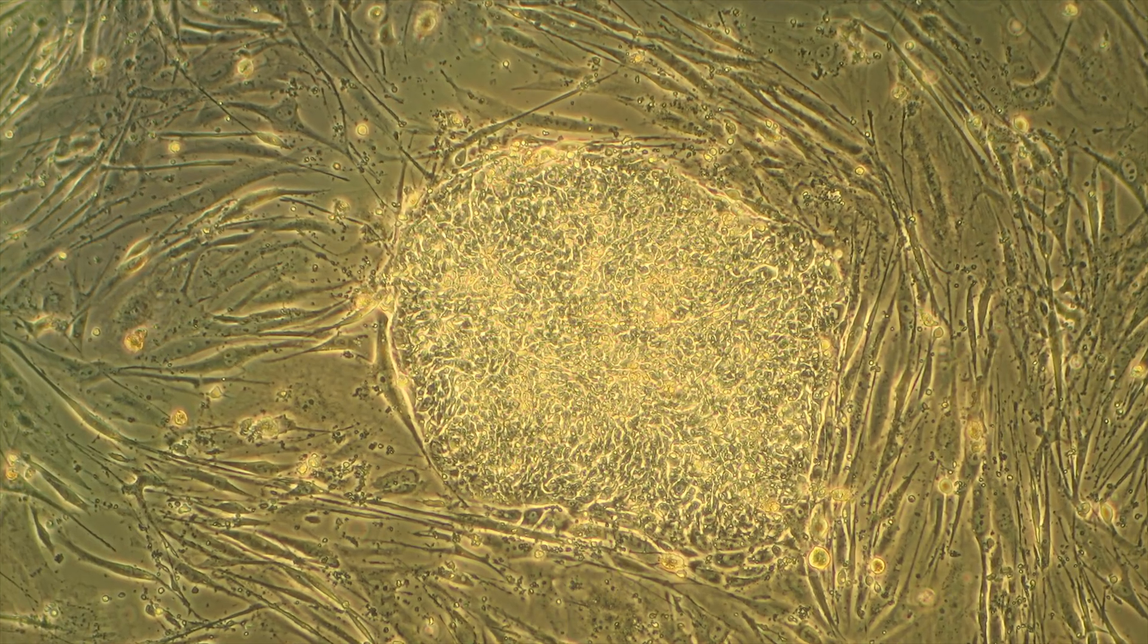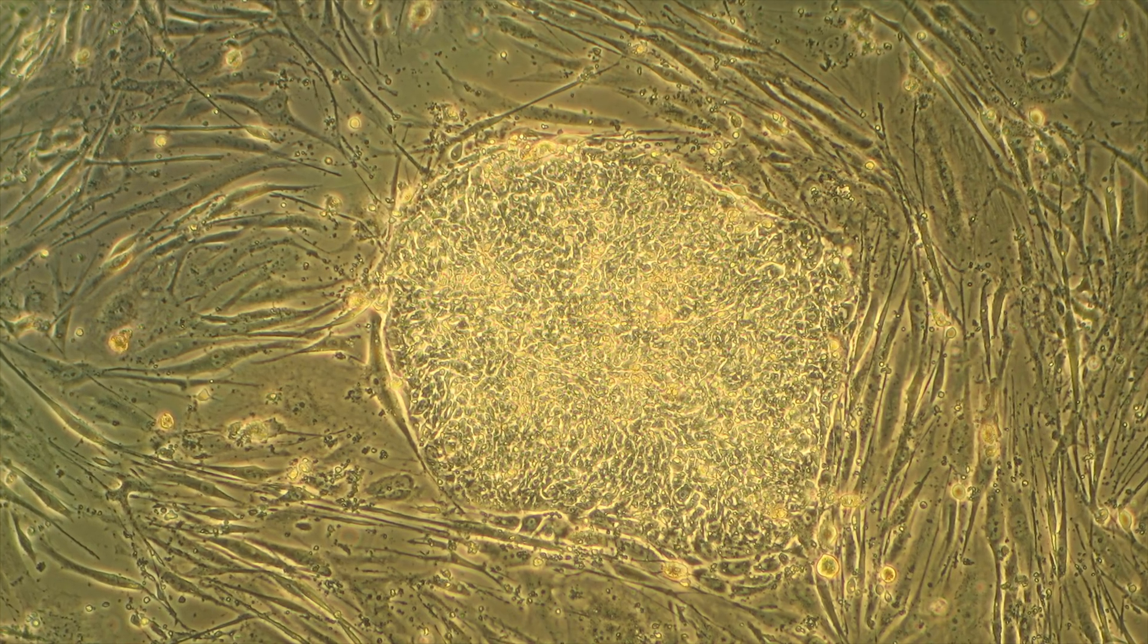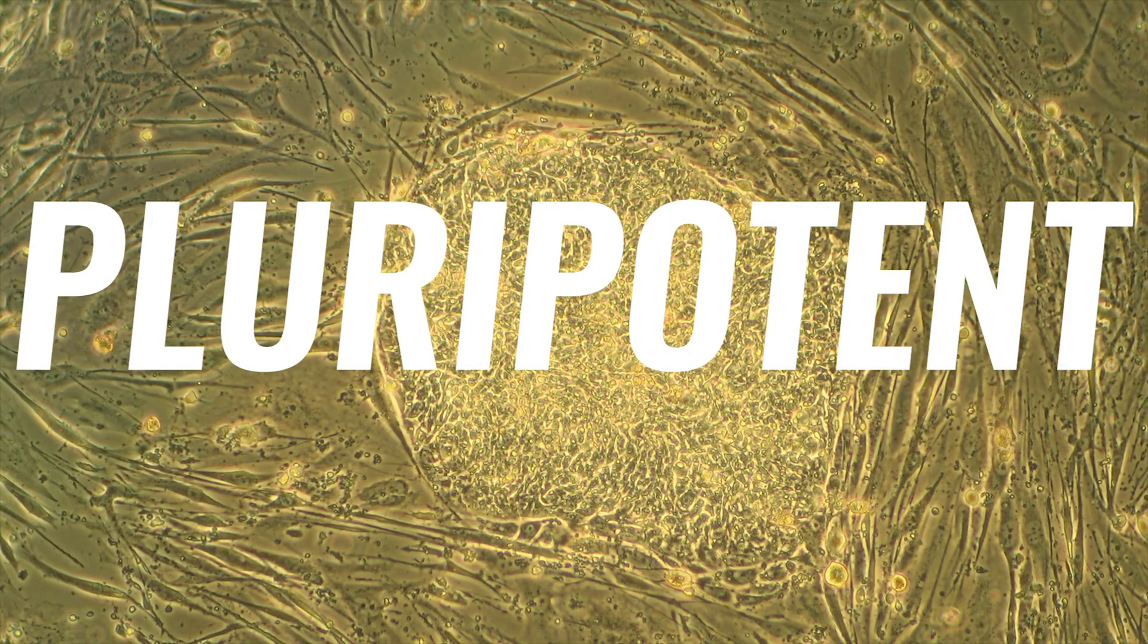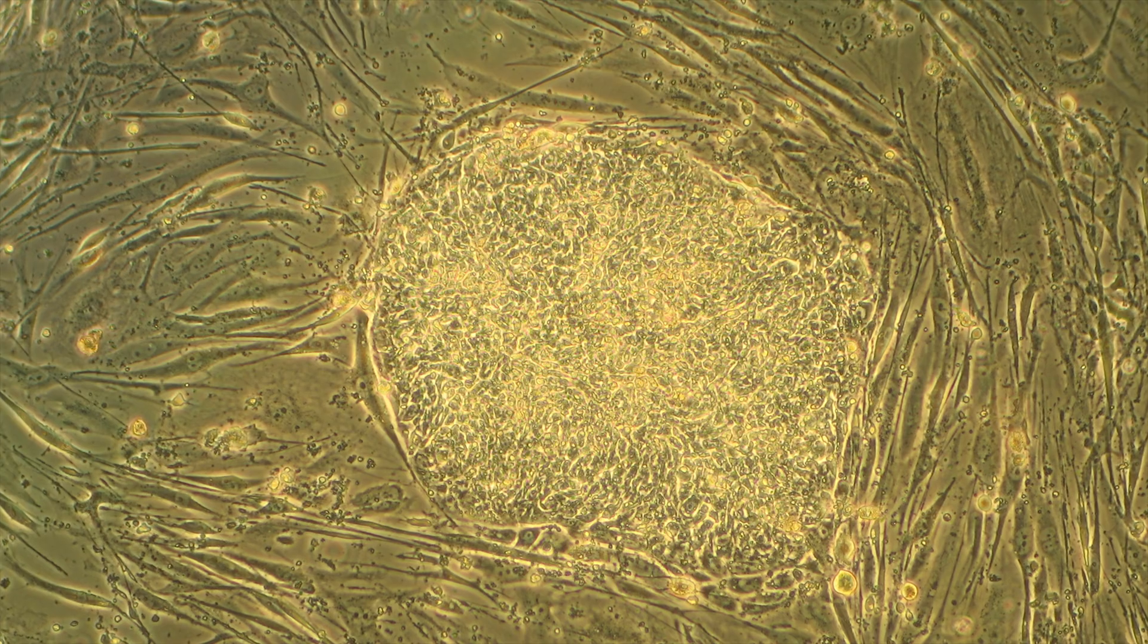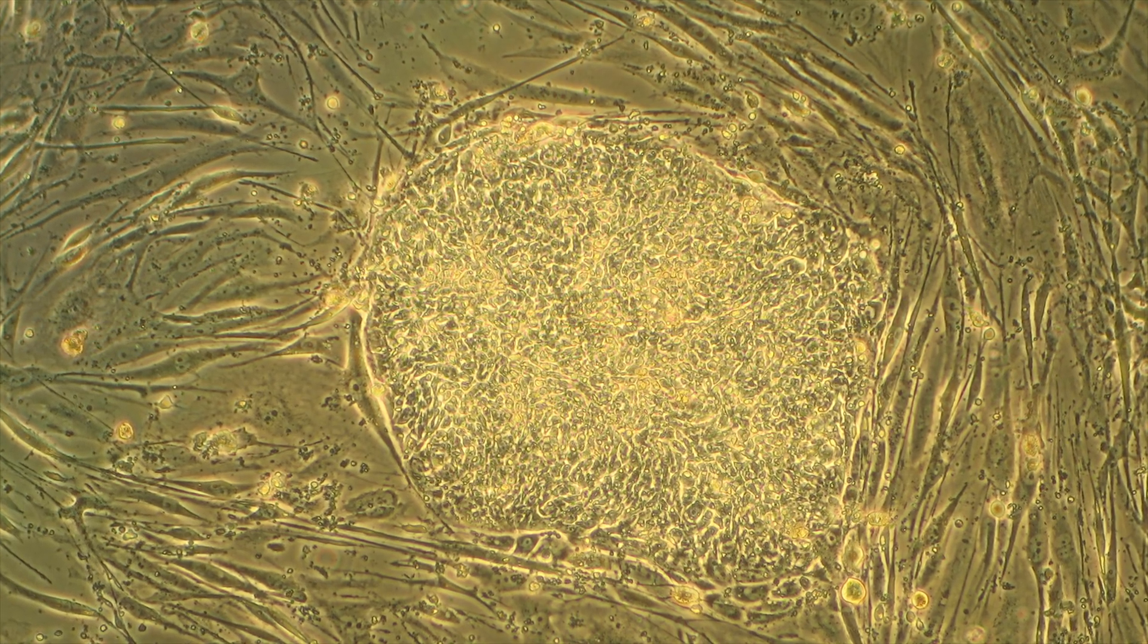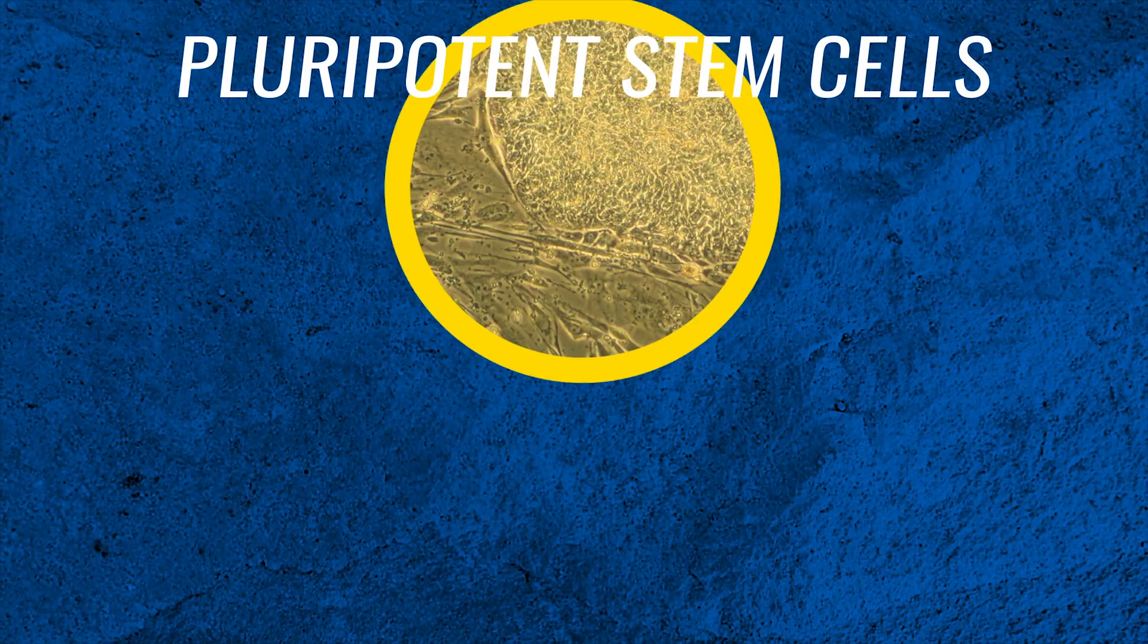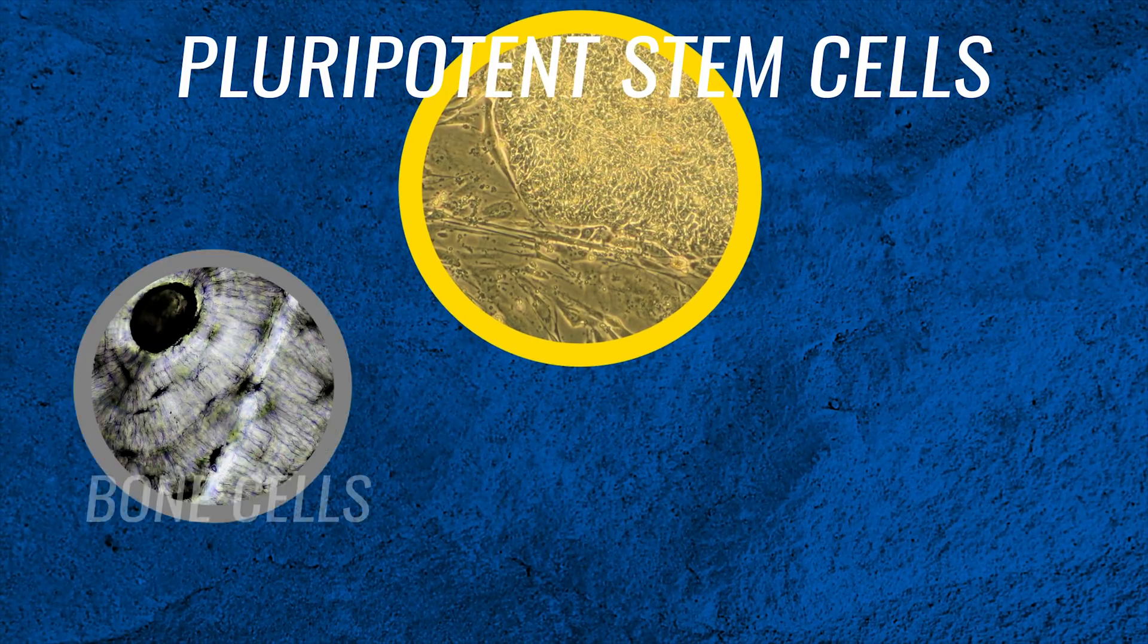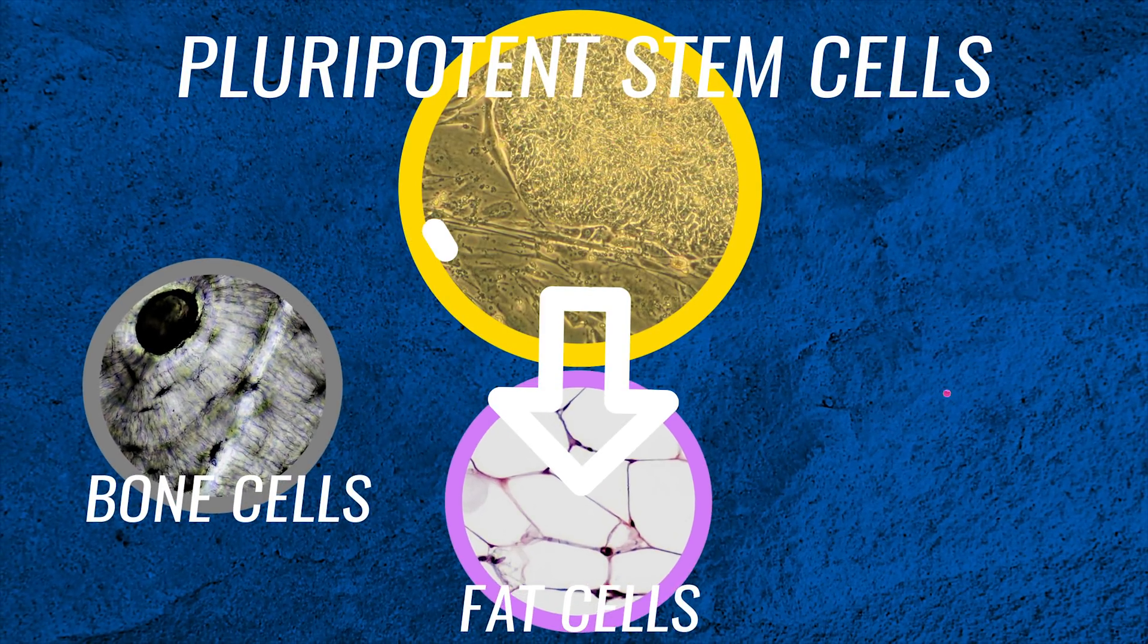Another cell type that has also been studied for the starting material of muscle cells are pluripotent stem cells. Pluripotent means capable of many things.